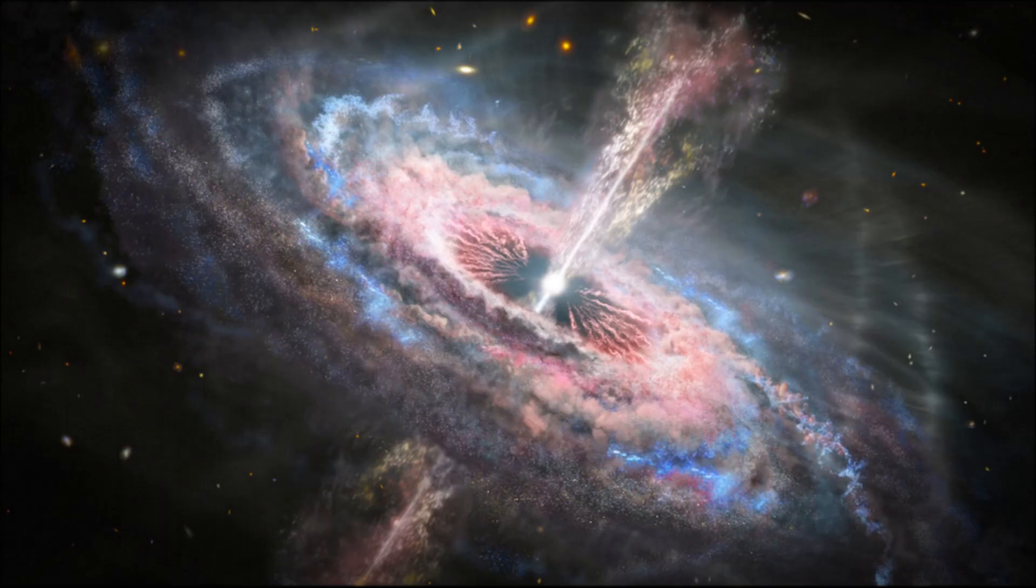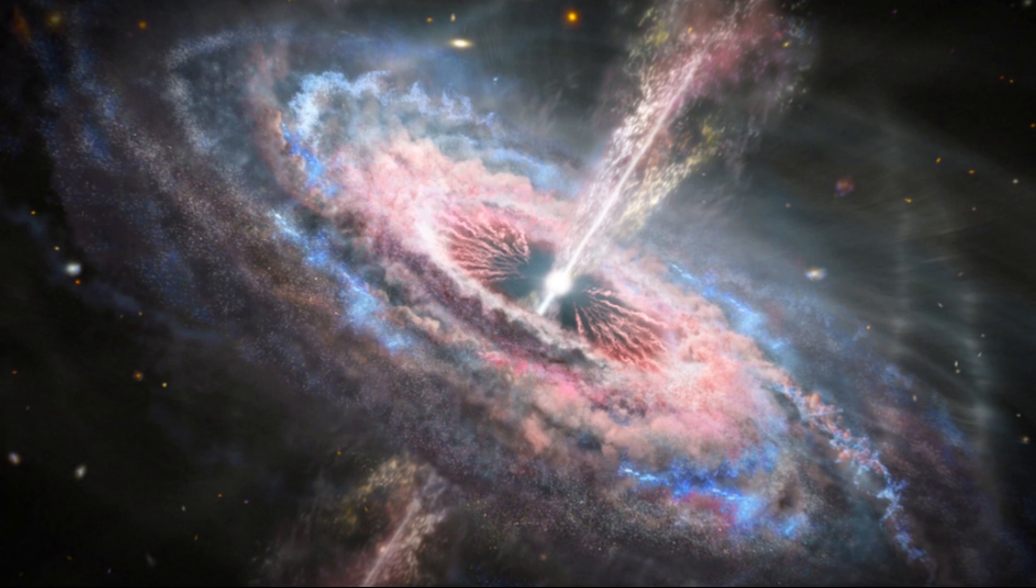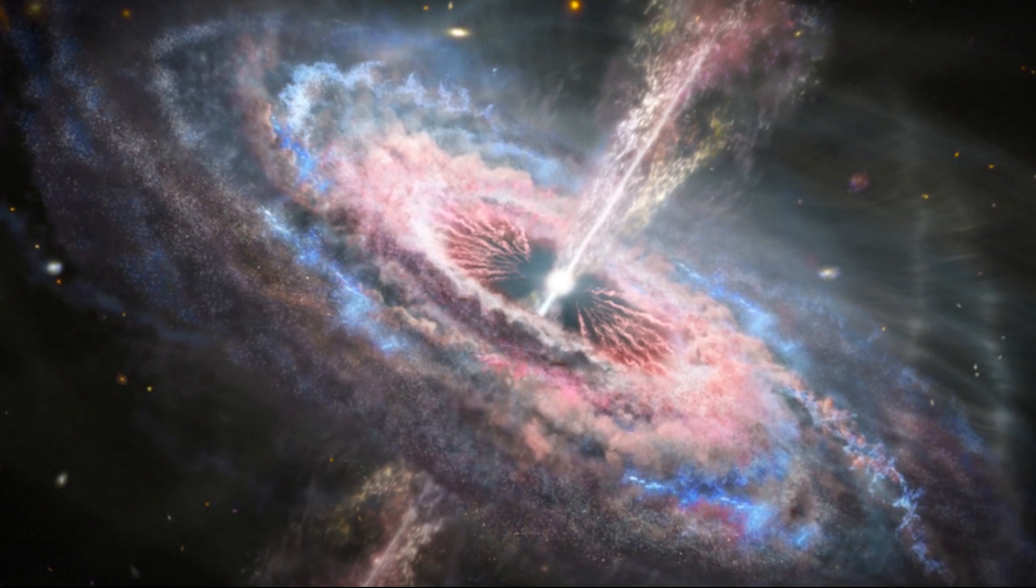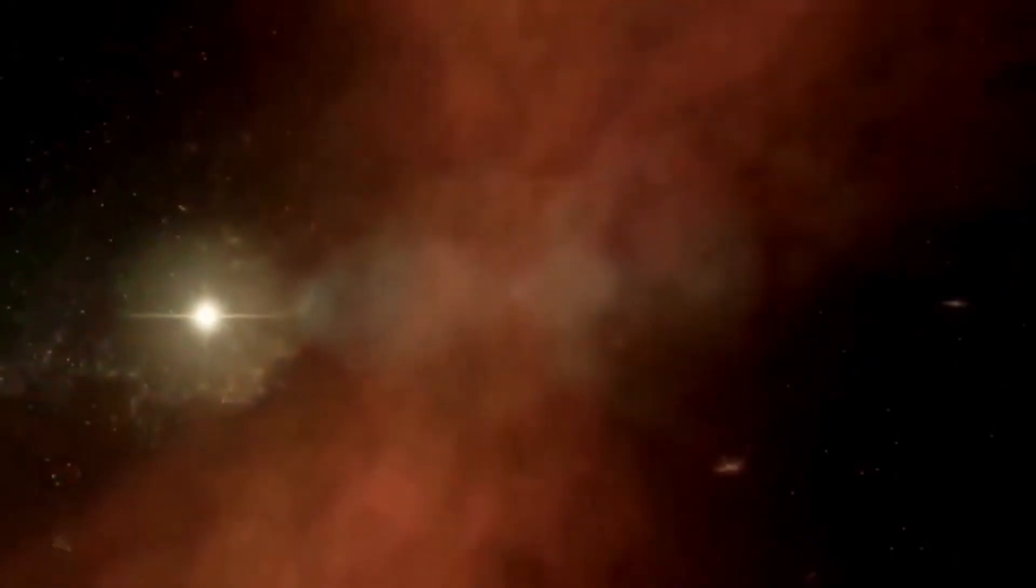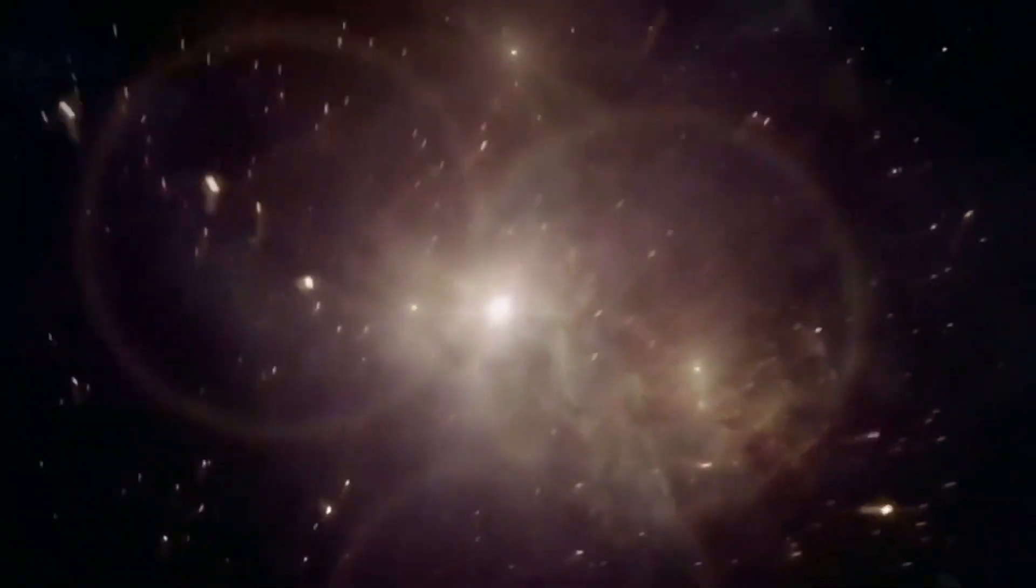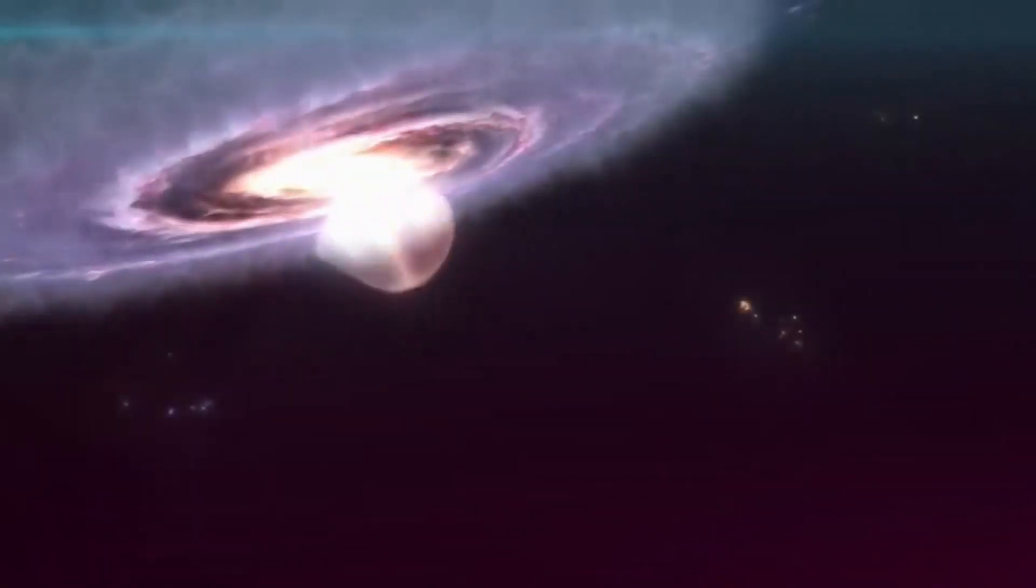As you can see, this is an artist concept of a galaxy with a brilliant quasar at its center. A quasar is a very bright, distant and active supermassive black hole that is millions to billions of times the mass of the Sun. Among the brightest objects in the universe, a quasar's light outshines that of all the stars in its host galaxy combined. Quasars feed on infalling matter and unleash torrents of winds and radiation, shaping the galaxies in which they reside.